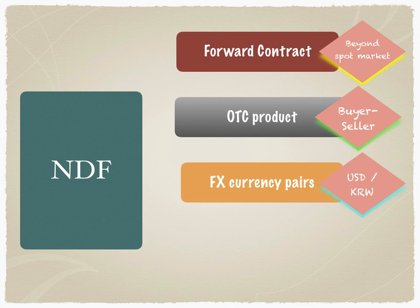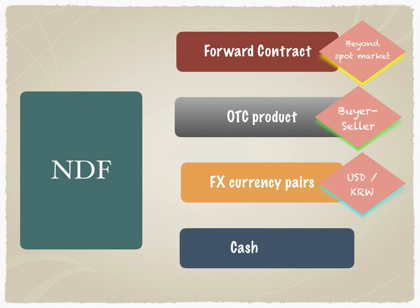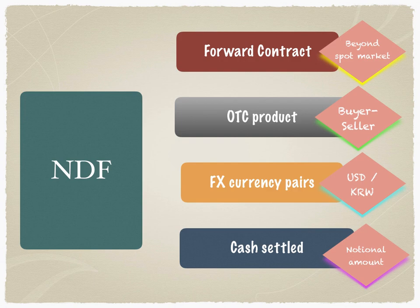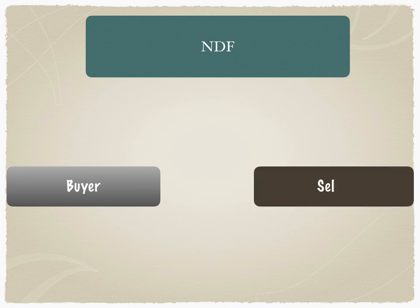These illiquid currency pairs include USD/KRW — the dollar and Korean won — USD/INR, the Indian rupee, and USD/CNY, the Chinese yuan. All NDFs are cash settled. Cash settled implies that there is a notional amount taken into consideration, and the settlement of the NDF takes place in a single currency — in most cases, the USD.